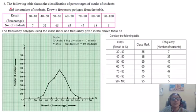Your next question is, the following table shows classification of percentage of marks of students and number of students. Draw frequency polygon. So, result in percentage is given: 30 to 40%, 7 students. 40 to 50%, 33 students. 50 to 60%, 45 students.